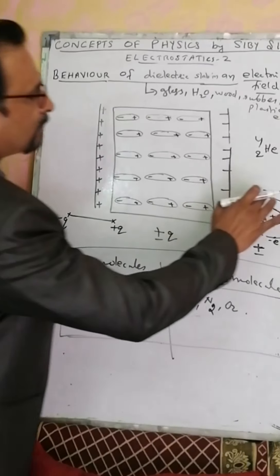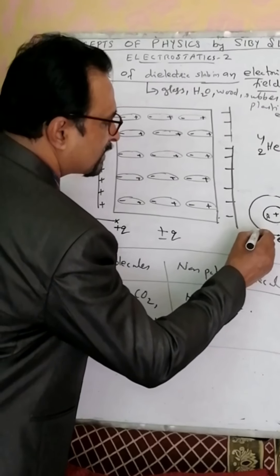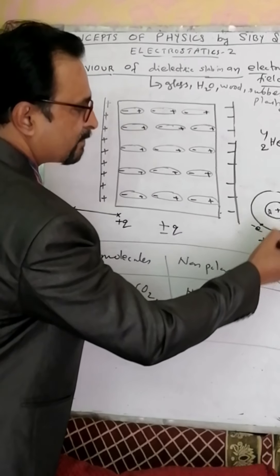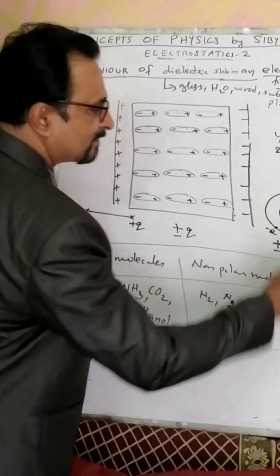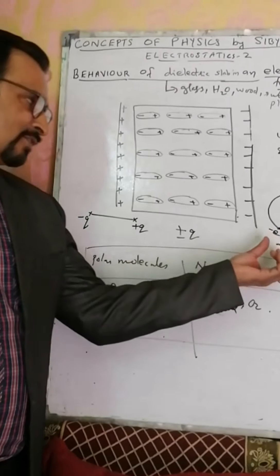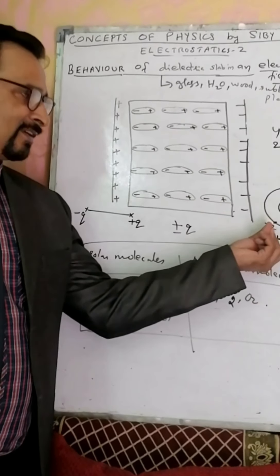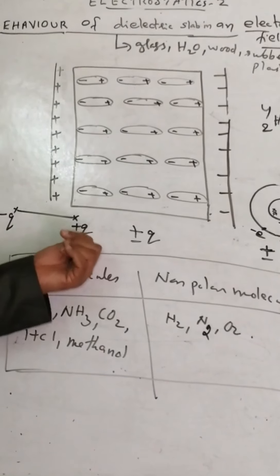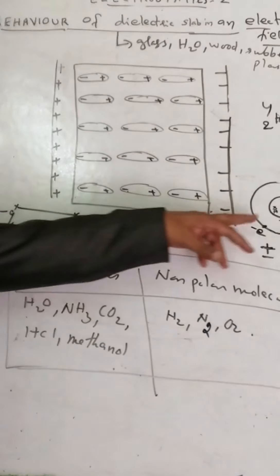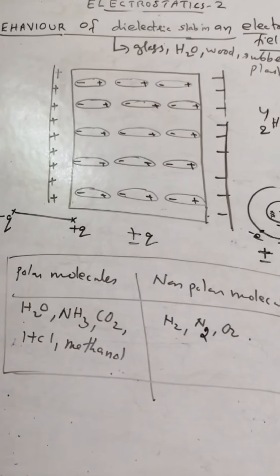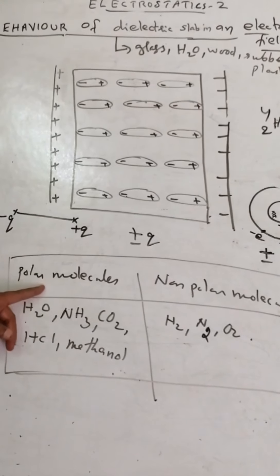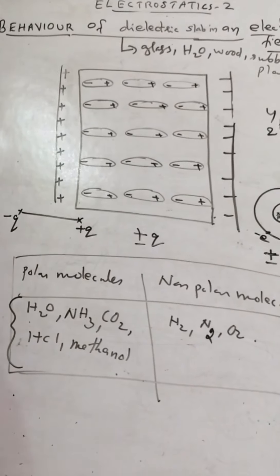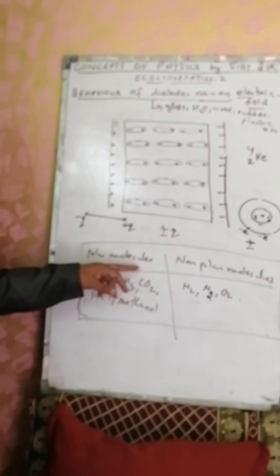But assume both electrons are located asymmetrically — somewhere on one side. In that case it is not symmetric with respect to the positive charge, so the center of mass of the minus charge shifts to one side. Total negative charge is minus 2e and total positive charge is plus 2e, but plus Q and minus Q are located at two different points. So this type of atom behaves like an electric dipole and is called a polar molecule, because the center of mass of the positive charge and center of mass of the negative charge are at different points.